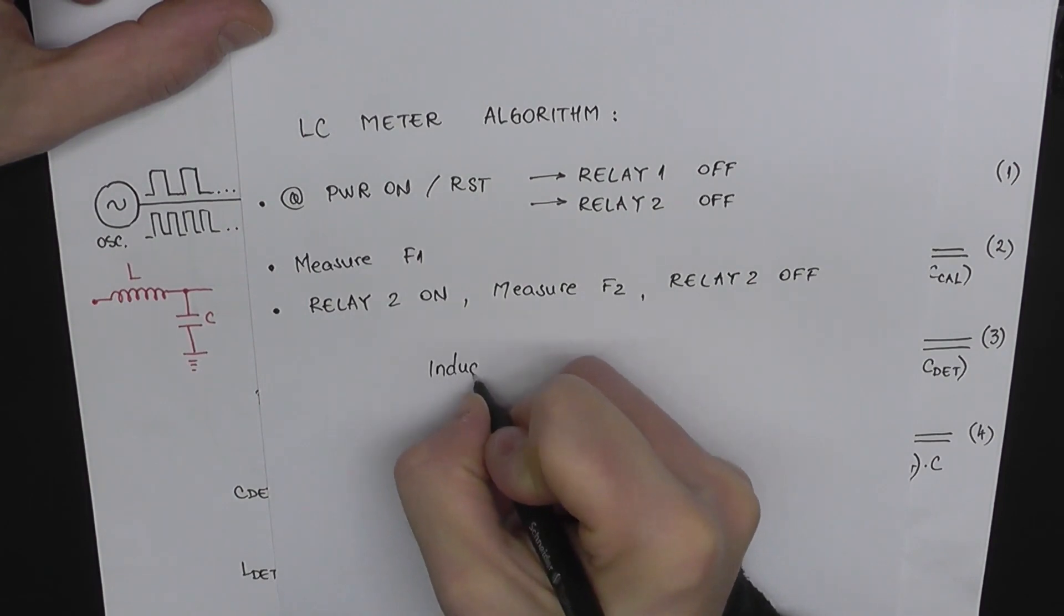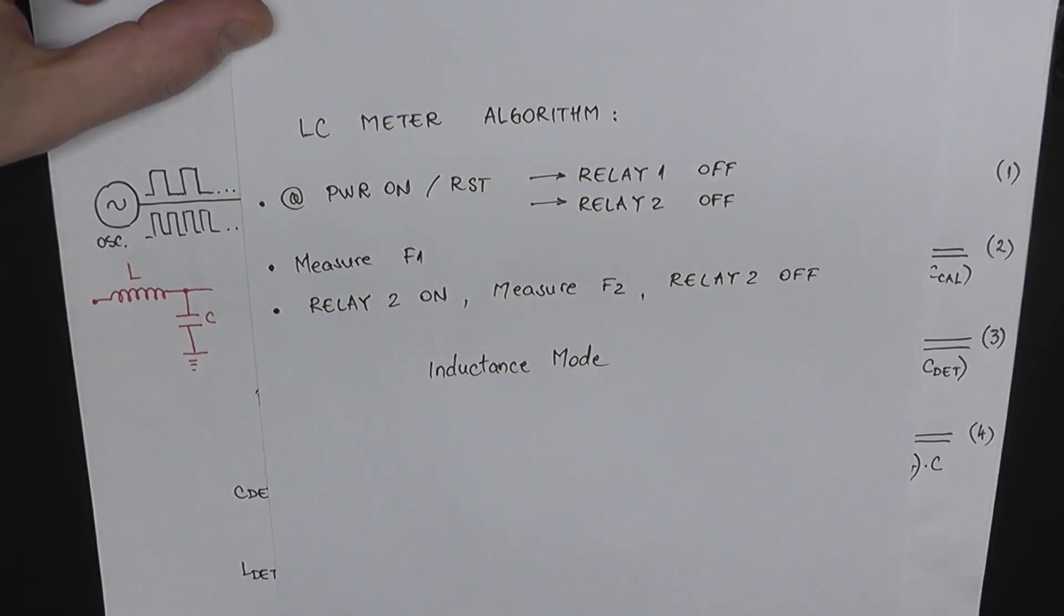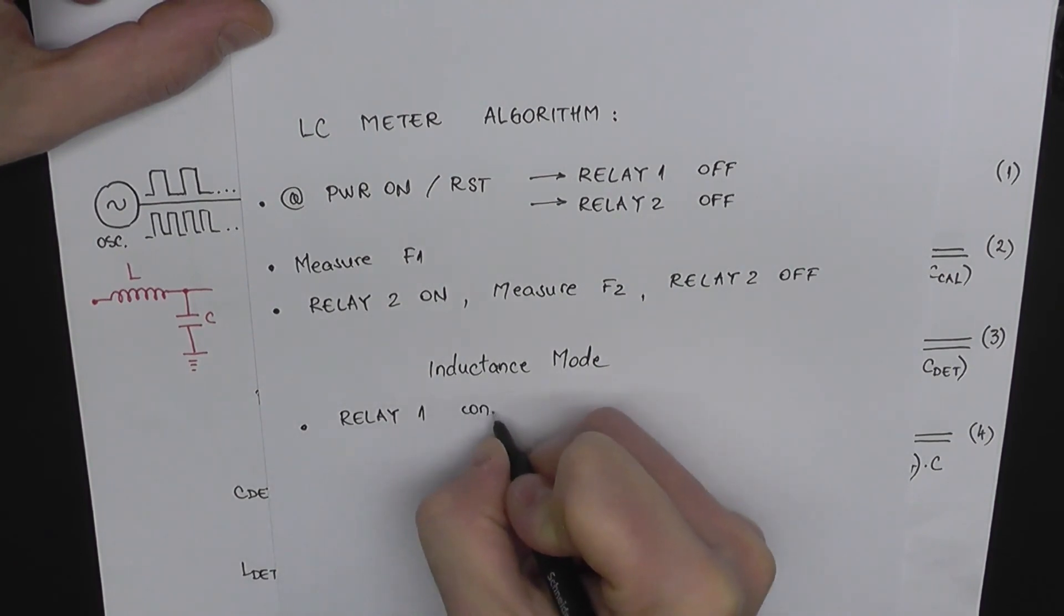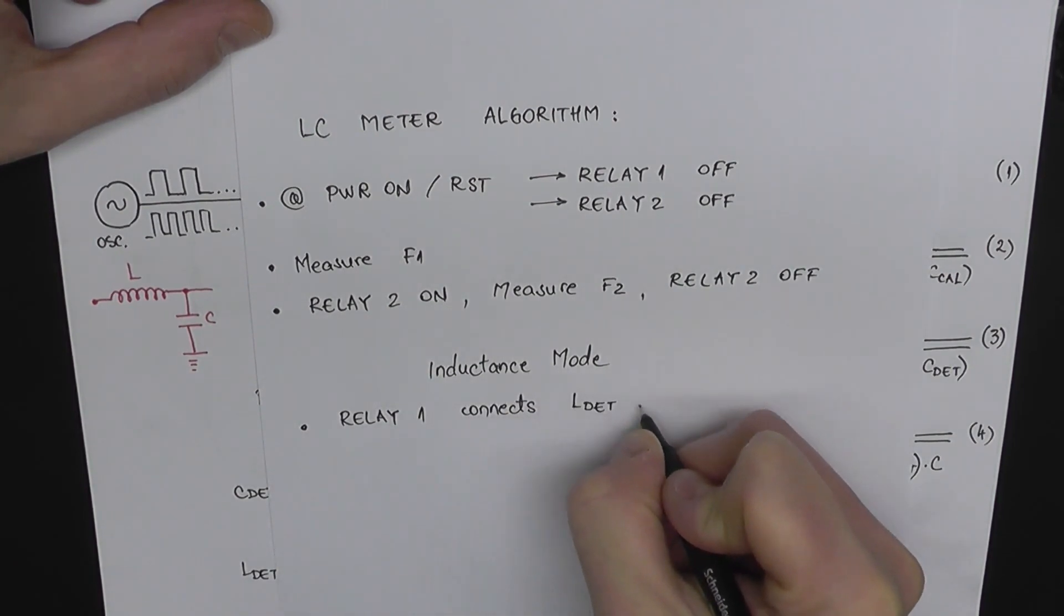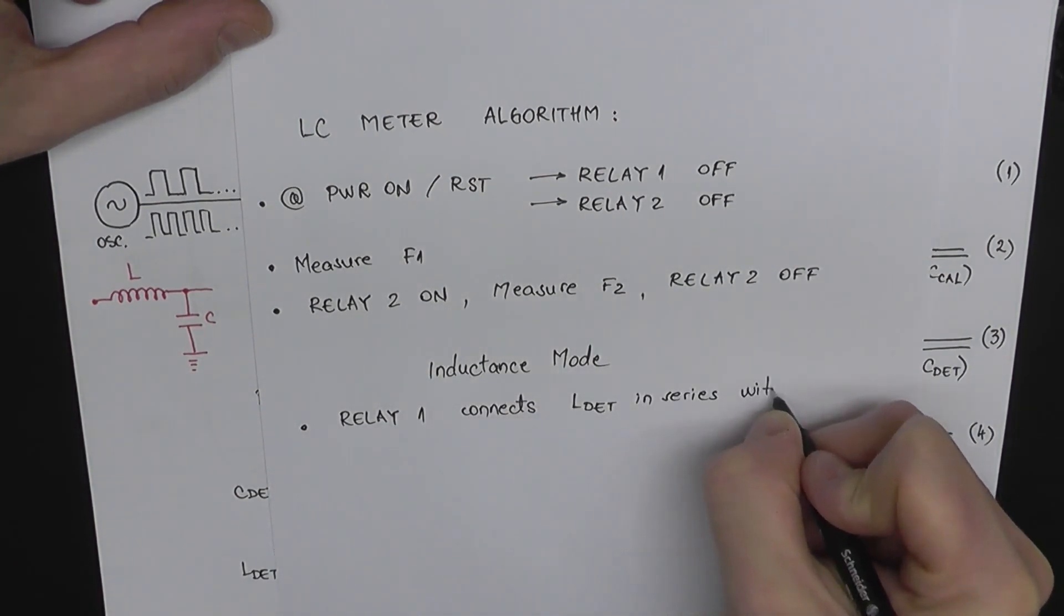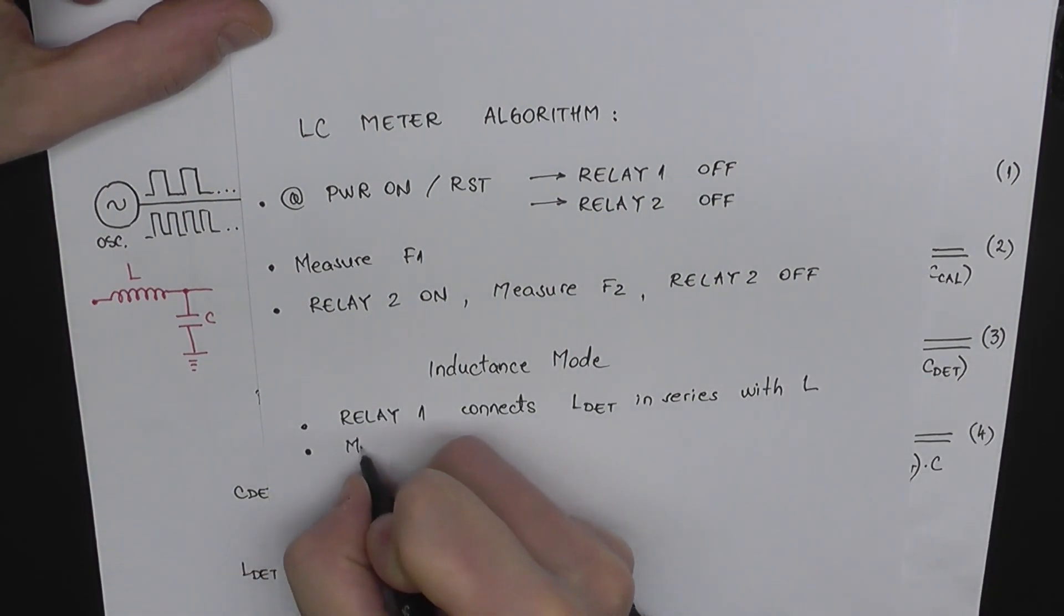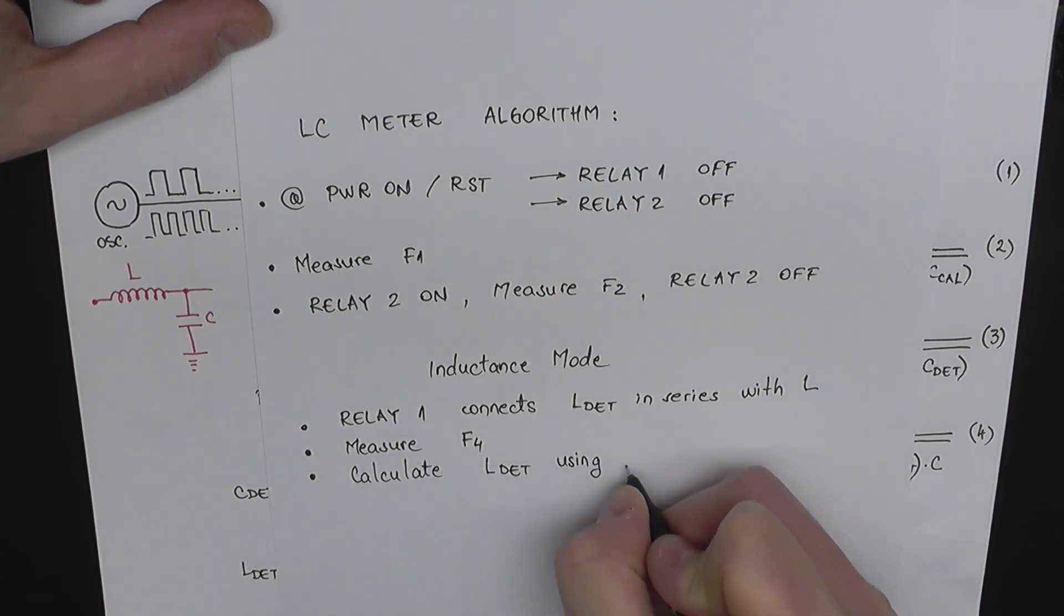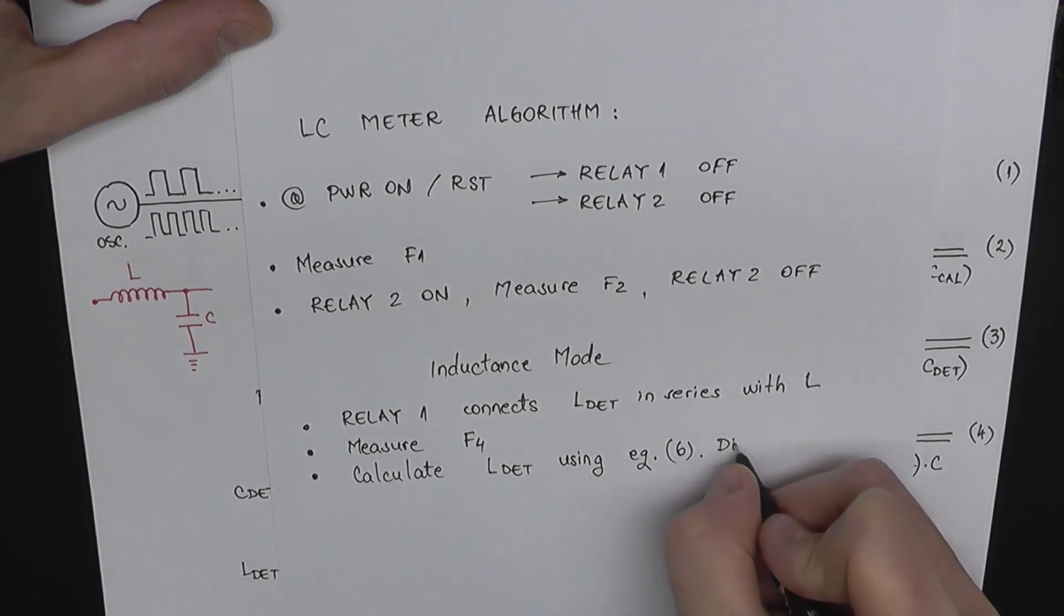Now we're going to have the two different scenarios we were talking about. If we're in the inductance measuring mode, we switch relay 1 so that the inductance that we want to measure gets connected in series to the oscillating circuit. Step 5: Measure the frequency again. Step 6: We use equation 6 to calculate the inductance and we display the value on the LCD.